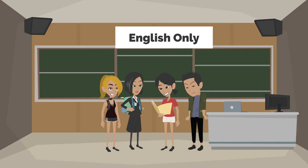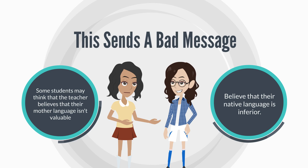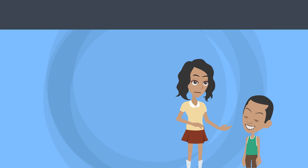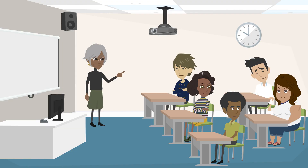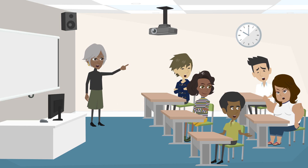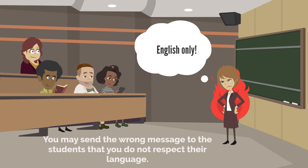Some teachers think that when a student goes to an English class, they have to speak English only with no exceptions. This sends a bad message to students. Some students may think the teacher believes their mother language isn't valuable, or come to believe their native language is inferior. Students may take offense and may start to dislike the teacher. Don't get angry when they speak in their native language — they may honestly not understand you, and screaming will discourage them from learning. The only time you might want to address it is when they come to class and refuse to speak English at all, just having a conversation in the back of the room in their native language and not paying attention. Kindly remind them and let their grades reflect it. If you insist on English only, you may send the wrong message that you do not respect their language.